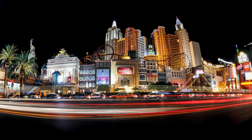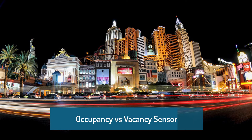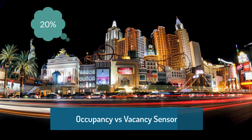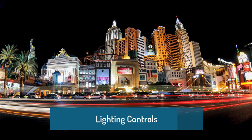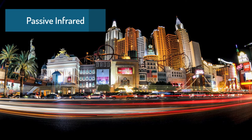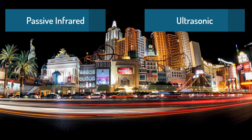What's the difference between an occupancy sensor and a vacancy sensor? Lighting consumes up to 20% of the total energy used in commercial buildings, and considerable energy can be saved by adding lighting controls. We'll look at two commonly used types of occupancy sensors — the passive infrared sensor and the ultrasonic sensor — and where they are most commonly used and can save the most energy.